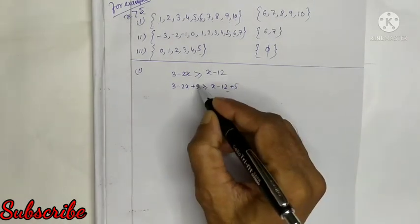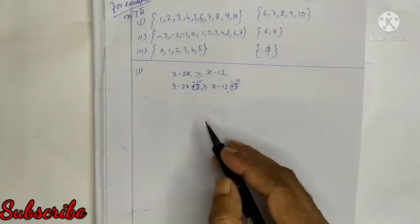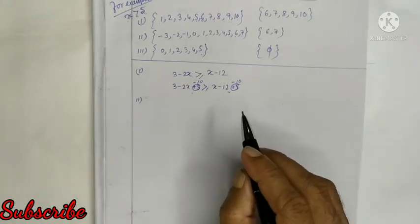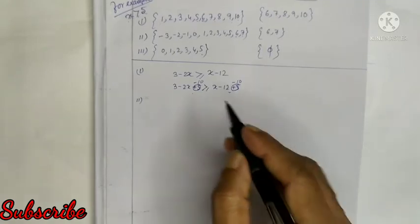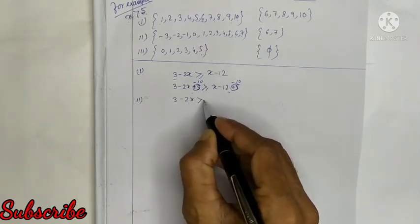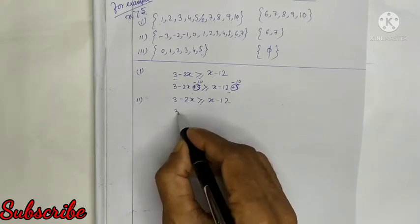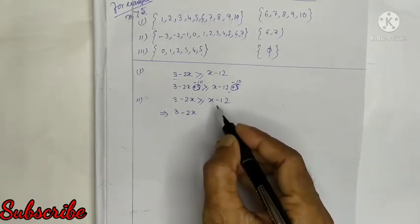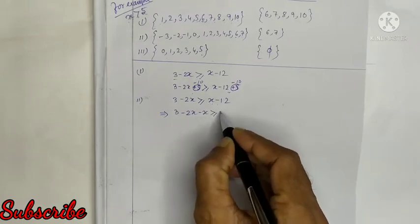You may also subtract any number — for example, minus 10 — from both sides. Rule number 2: if any number is transposed from one side to the other, the sign must be changed. For example, in 3 minus 2X ≥ X minus 12, transposing X from the right gives 3 minus 2X minus X ≥ minus 12.